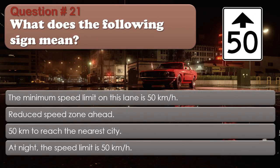Question number 21. What does the following sign mean? The minimum speed limit on this lane is 50 km per hour. Reduced speed zone ahead. 50 km to reach the nearest city. At night, the speed limit is 50 km per hour. The correct answer is: Reduced speed zone ahead.